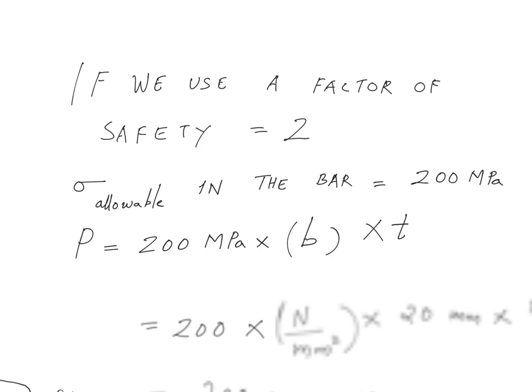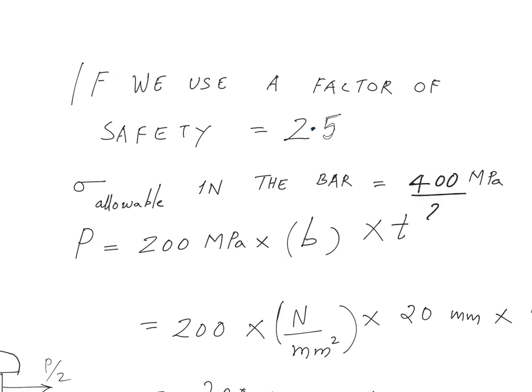So having said that, now let's try to solve this problem. Here I'm using a factor of safety of 2.5, then my sigma allowable in the bar will be, let me erase this that was written for a factor of safety of 2, but for a factor of safety of 2.5 that will be 400 divided by 2.5.